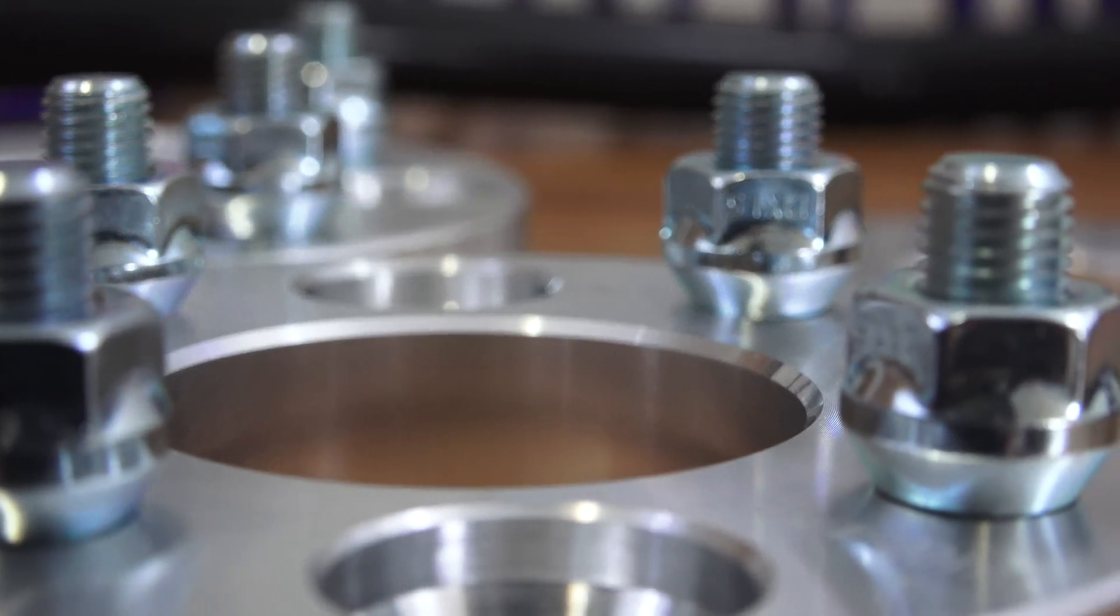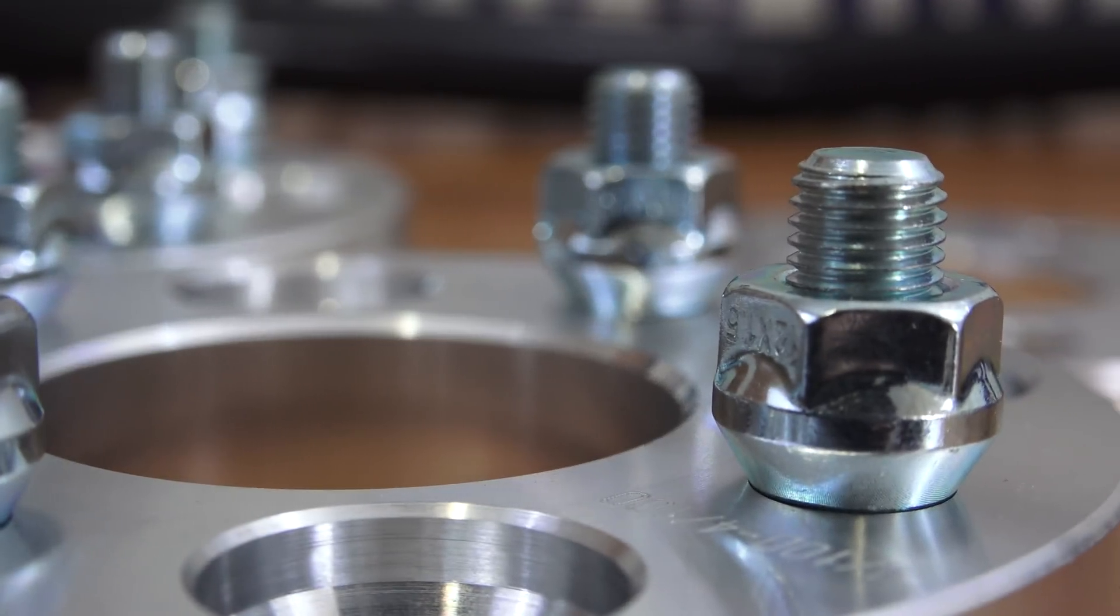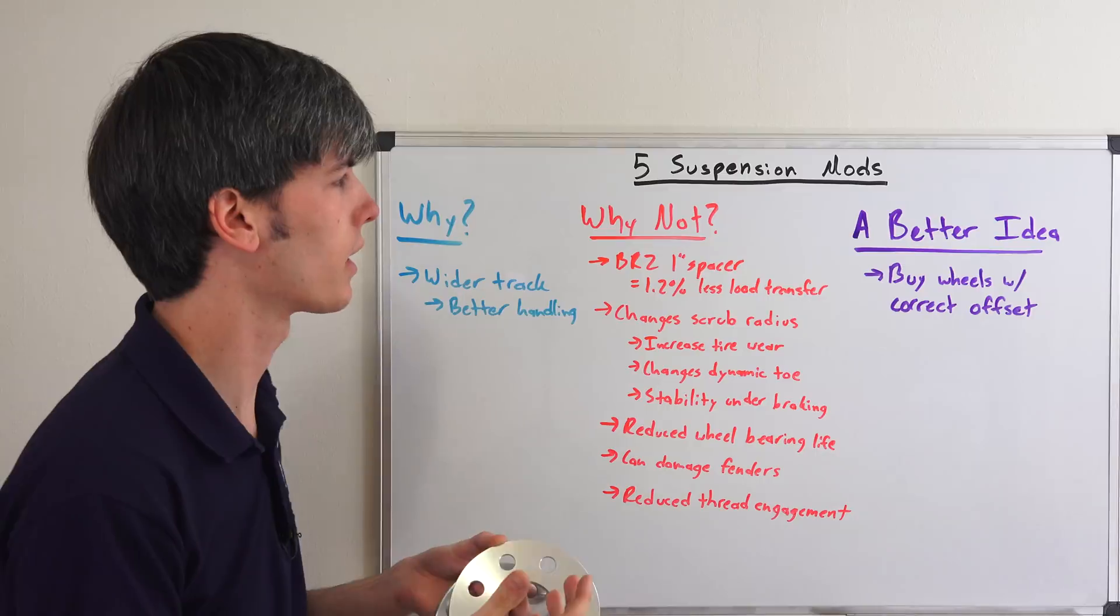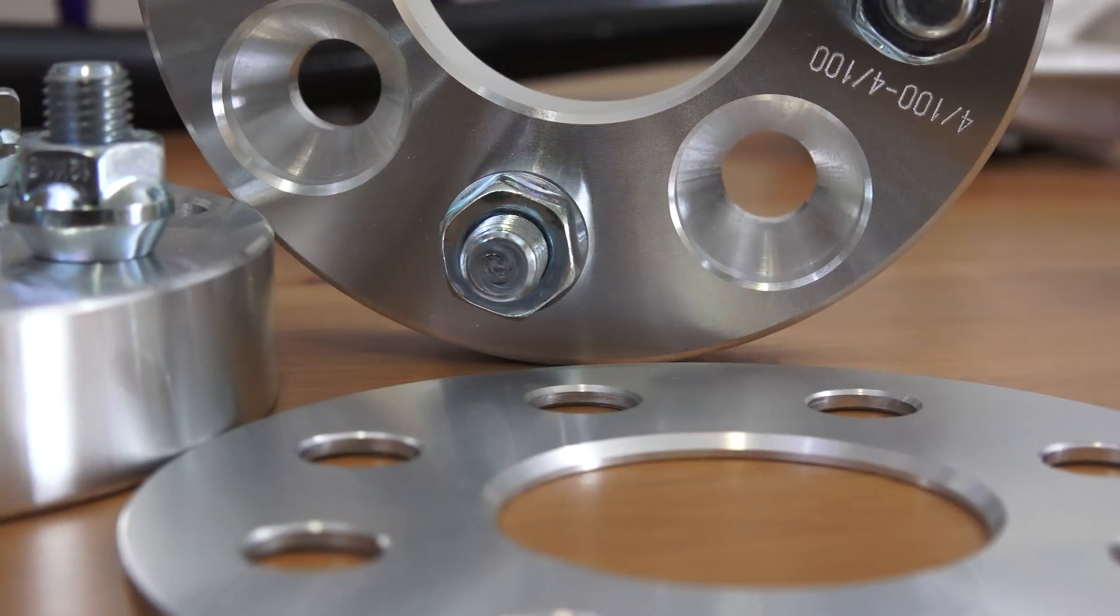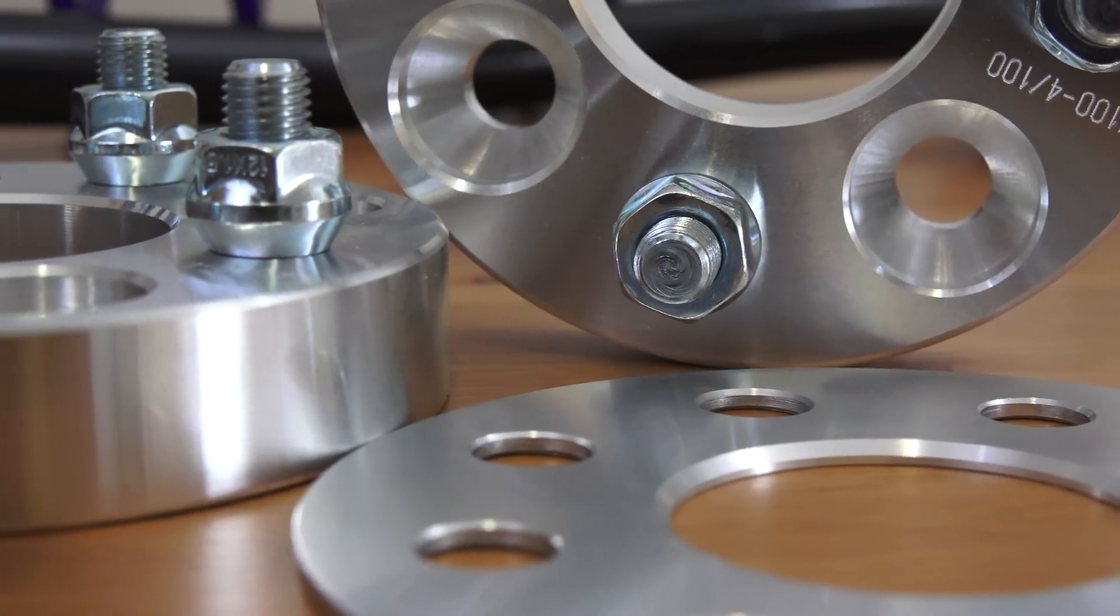What's a better idea? Well, a better idea if you simply want to widen your wheels or something like that is to buy wheels with the correct offset. So you're not going in there and changing some of these parameters that can have negative consequences on how your car handles.